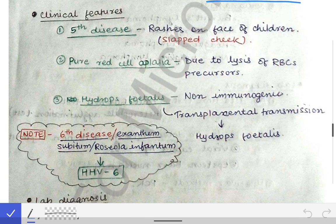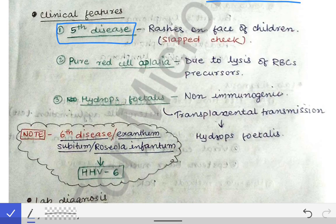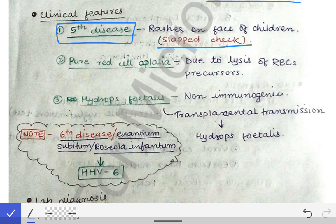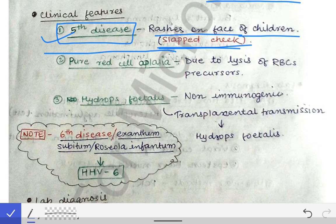Now we will see the clinical features of the infection caused by parvovirus B19. The first disease is called the fifth disease, also known as slapped cheek disease. When infection occurs with parvovirus in a child, the cheeks appear very red or pinkish, mimicking as if the child has been slapped. There is a rash on the face of the children.